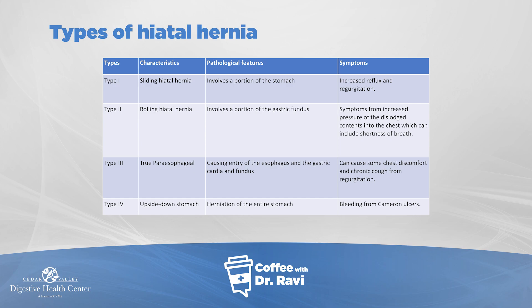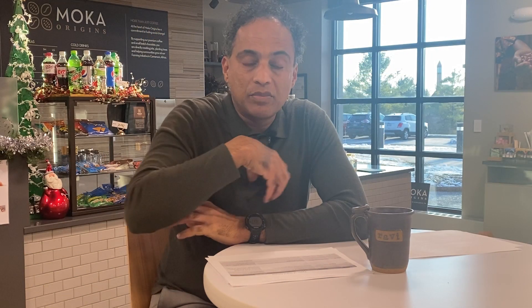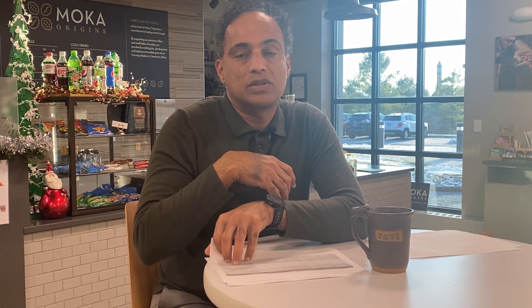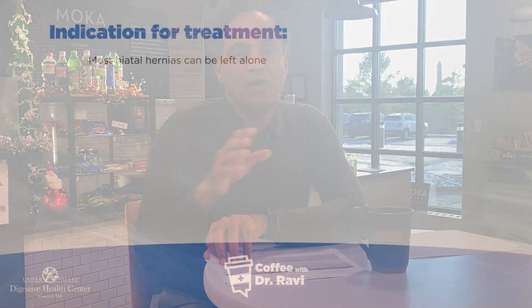The fourth type is a bit different in that the entire stomach and sometimes other organs can get in. Sometimes this causes symptoms like chest discomfort and chronic cough. Sometimes the inside of it bleeds, and that's called Cameron ulcers — C-A-M-E-R-O-N ulcers — but these are unusual.